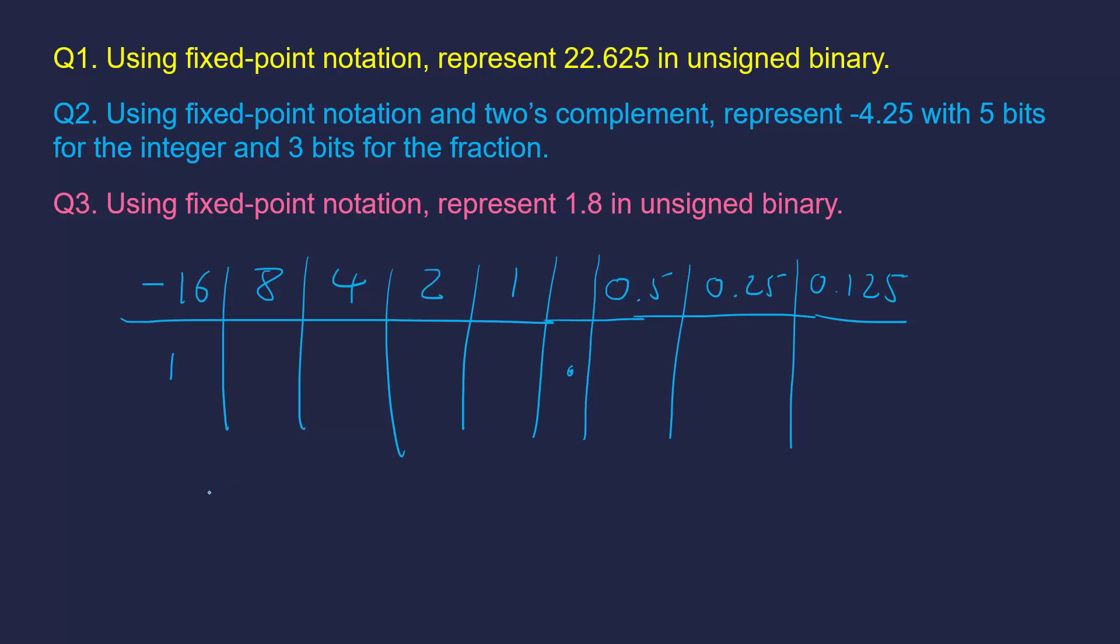So now we're looking to see what goes into this. So 8 goes into this once, remainder 3.75. 4 doesn't go into this, 2 does go into it once, remainder 1.75. 1 goes into this once, remainder 0.75. And now we're going to our fractional part, 0.5 goes into 0.75 once, remainder 0.25, therefore 0.25 goes into it once, remainder 0. And so we just have to write a 0 under the 0.125's column, because we're told it needs to be three bits for a fraction, we've got to make sure we follow those rules, otherwise it won't work properly. So that was our answer.